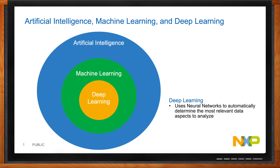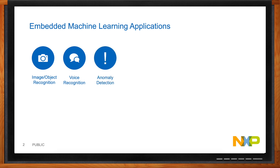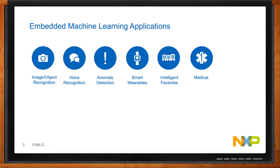In the embedded world, machine learning is well-suited for image and object recognition — like on a factory conveyor belt to identify and count objects, or for scales and image processing. It works for voice recognition to command appliances, anomaly detection to predict factory or product failures before they happen, smart wearables that adjust to your specific body's normal baselines, medical devices, and augmented reality displaying real-time virtual overlays in video.